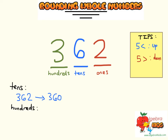Now for our next example, we're rounding to the hundreds place, which means we look at the 3. We're going to look at the 6 to see if it's greater than 5 or less than 5, and it is greater than 5, which means we're going to round up. So the answer is 400.